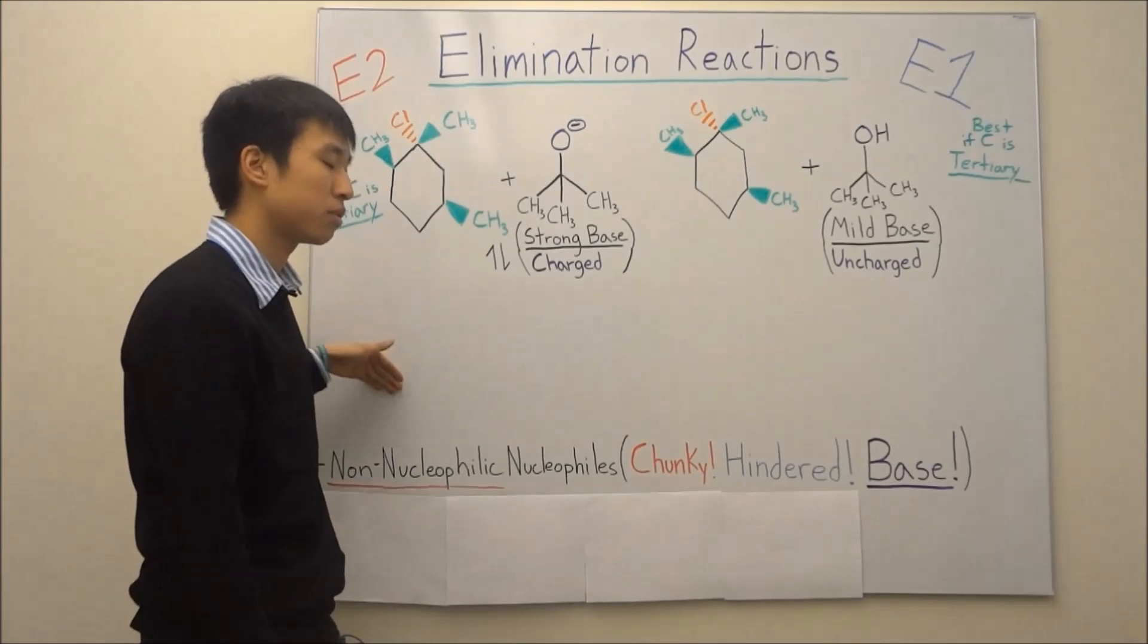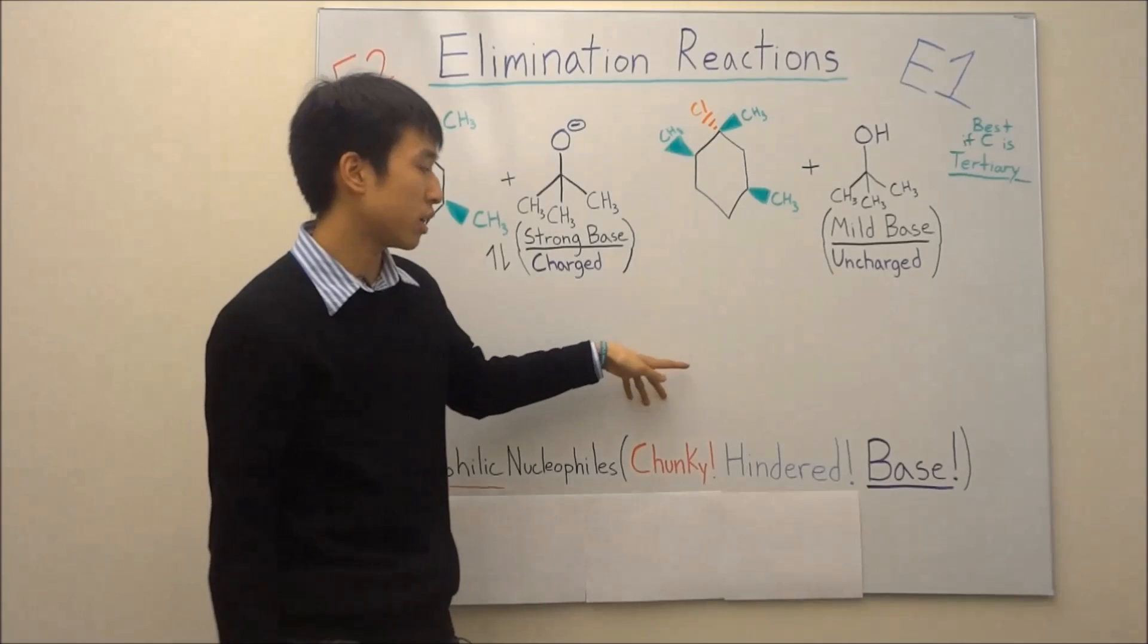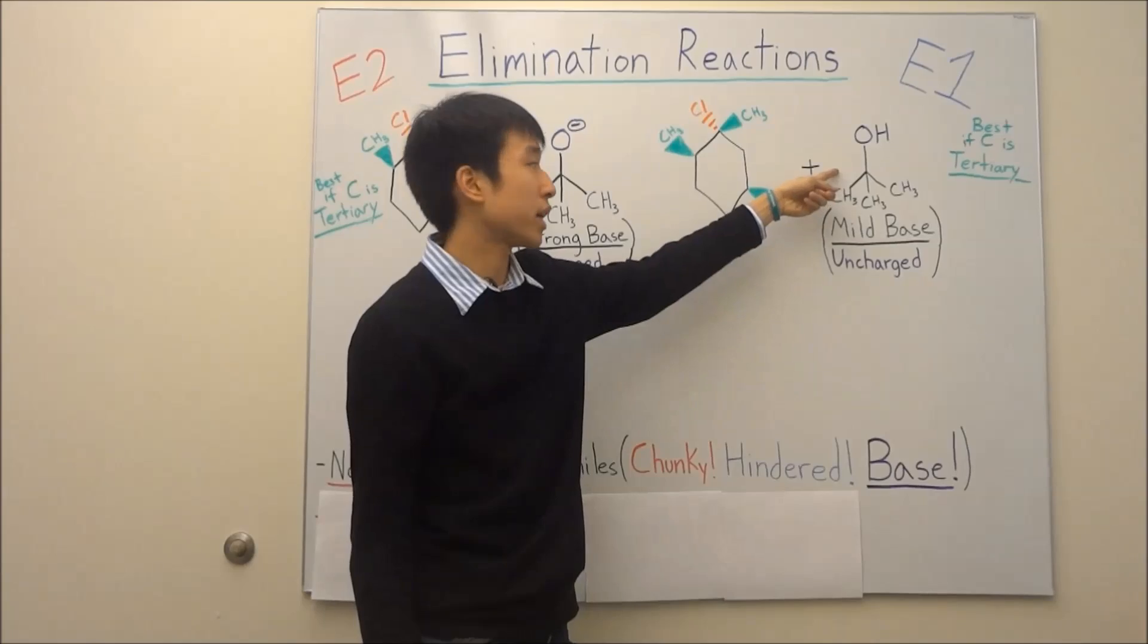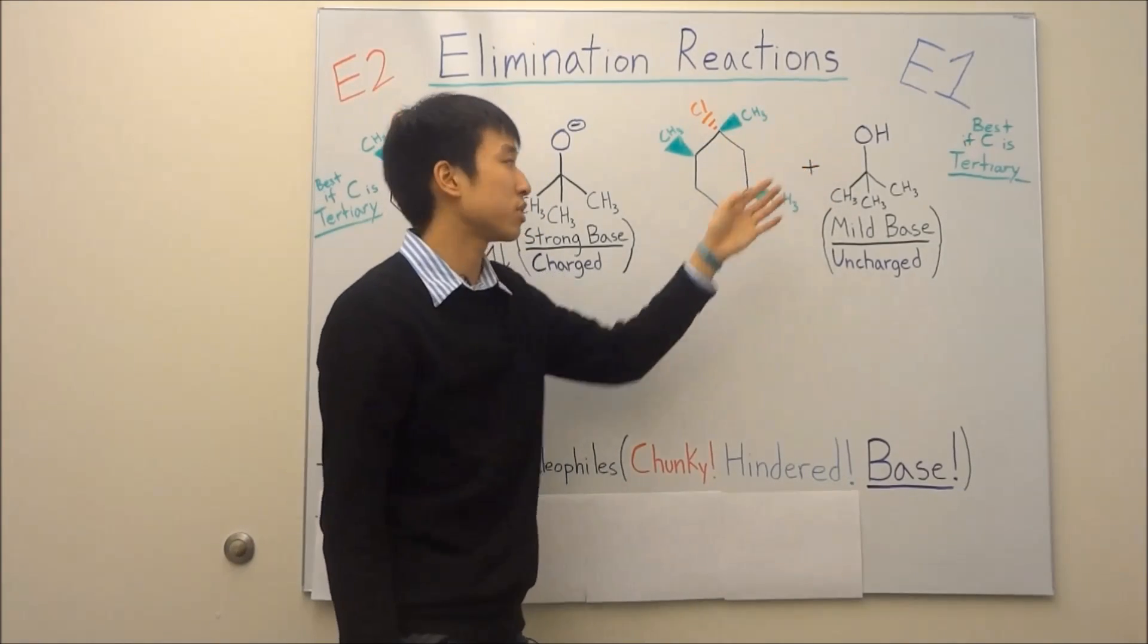Another example of a non-nucleophilic nucleophile that's chunky, hindered, and basic is tert-butanol over here. And this is used for E1 reactions.